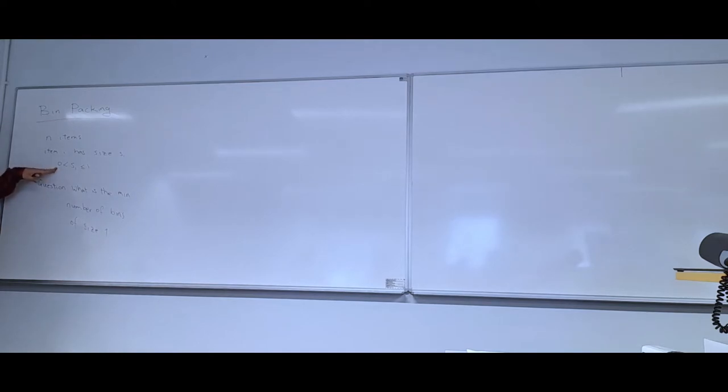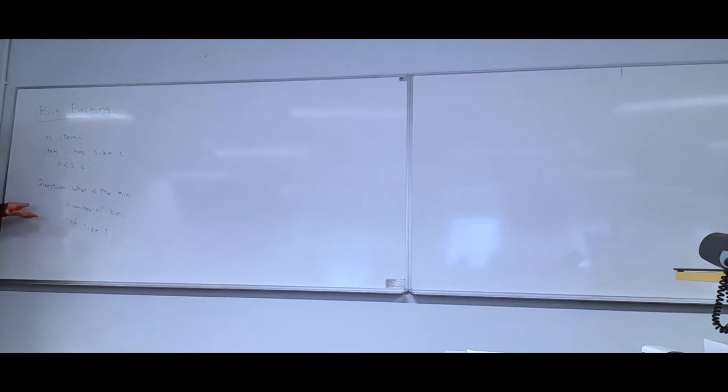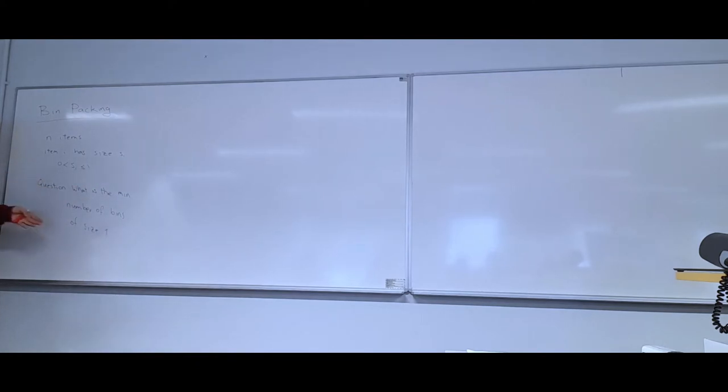Our item sizes are always greater than zero, because an item of size zero doesn't contribute anything. Item sizes have to be less than or equal to one, because otherwise the item would not fit. We also noted that this doesn't affect the generality of the problem — the fact that all bins have size one — because we can scale everything. If you multiply the bin size and all object sizes by some constant C, it's still the same problem.